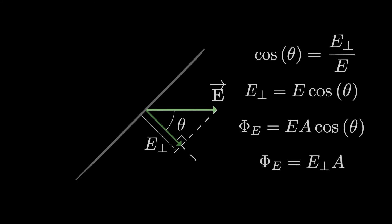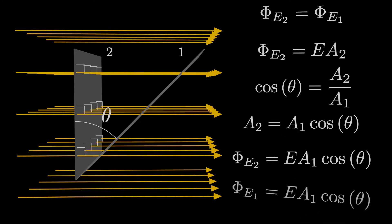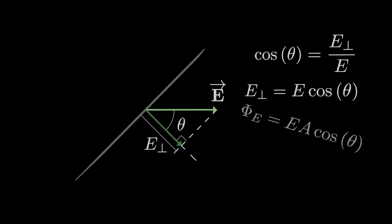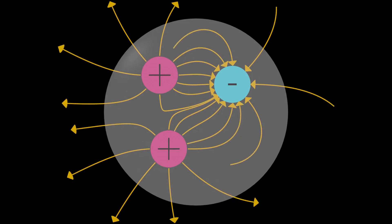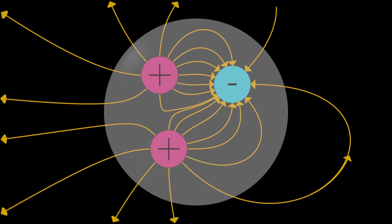There's a certain duality at play here. If we want to find the flux through an area, we can find one of two things: the area projection that's perpendicular to the electric field, or the electric field projection that's perpendicular to the area. Either of them will give us enough information to find the flux through the area, but usually it's much easier to find the electric field component that's perpendicular to the area. In the next video, we'll see why the notion of flux is so, so useful. See you then.